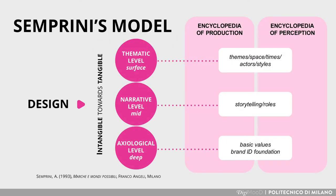On this topic, the semiotic model introduced by professor and semiologist Andrea Semprini is especially effective, as it identifies three levels which characterize the process of codifying the brand identity, from its most intangible level to its tangible expressions. These three levels act between what Semprini defines as the brand's encyclopedia of production and the consumer's encyclopedia of perception. The continuous process of gradual translation across the three levels has the function of matching the meanings produced by the brand with the ones perceived by users through a sense-making process.